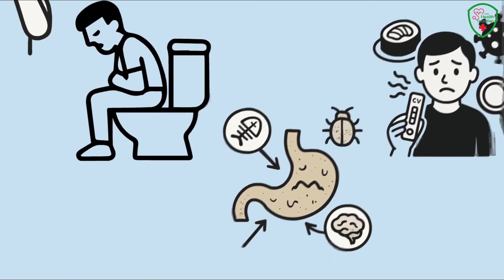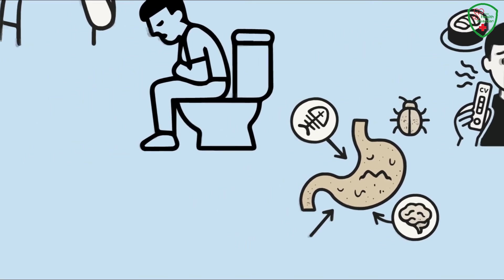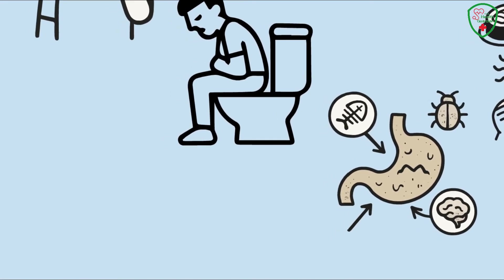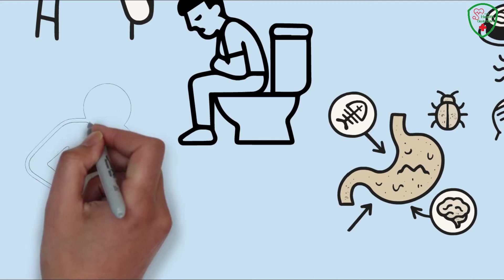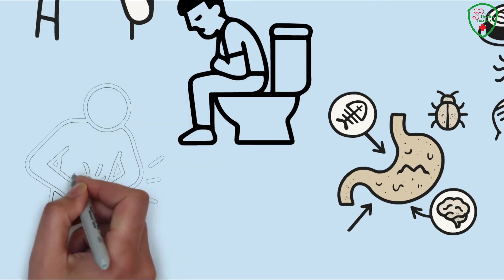For some, these digestive issues come with abdominal pain or cramps, like your stomach's throwing a tantrum. It's not just uncomfortable. It can disrupt your day and make you feel miserable. If your gut's acting up alongside other symptoms, don't ignore it, especially with FLIRT variants circulating.